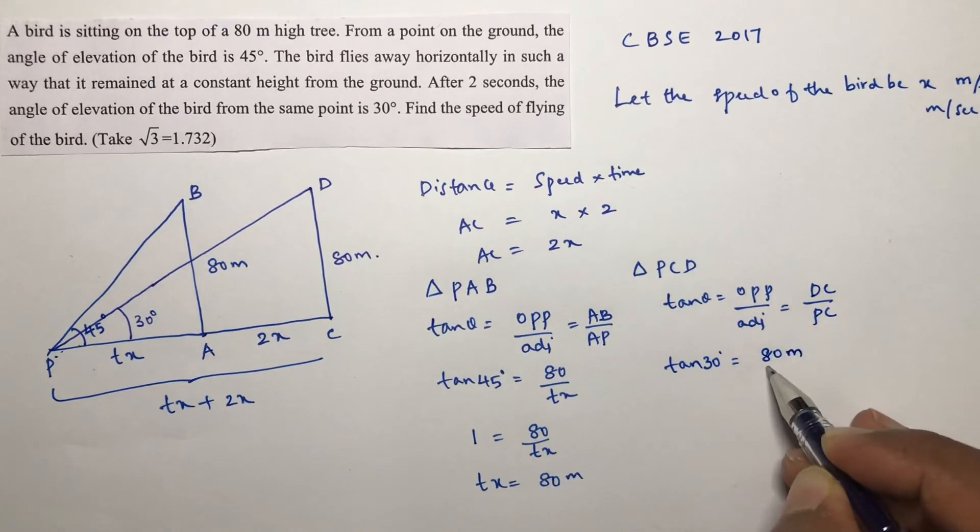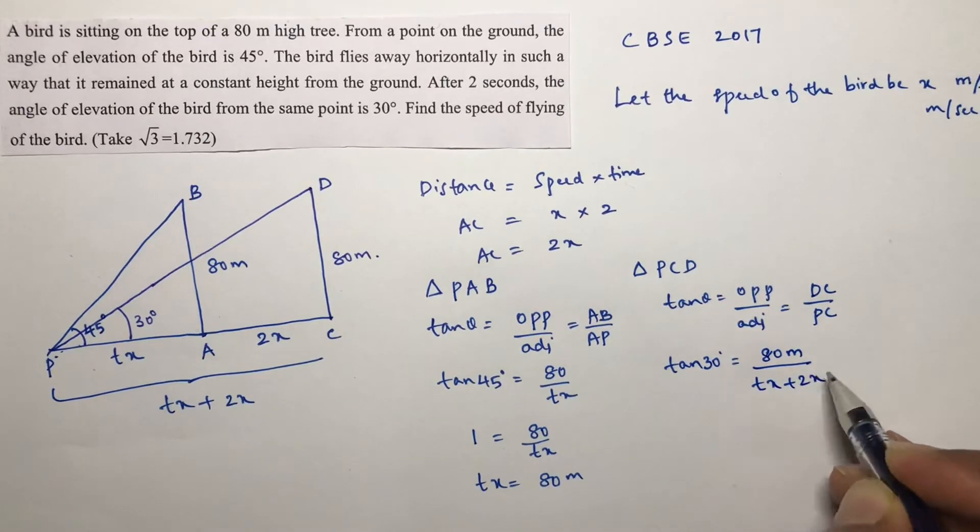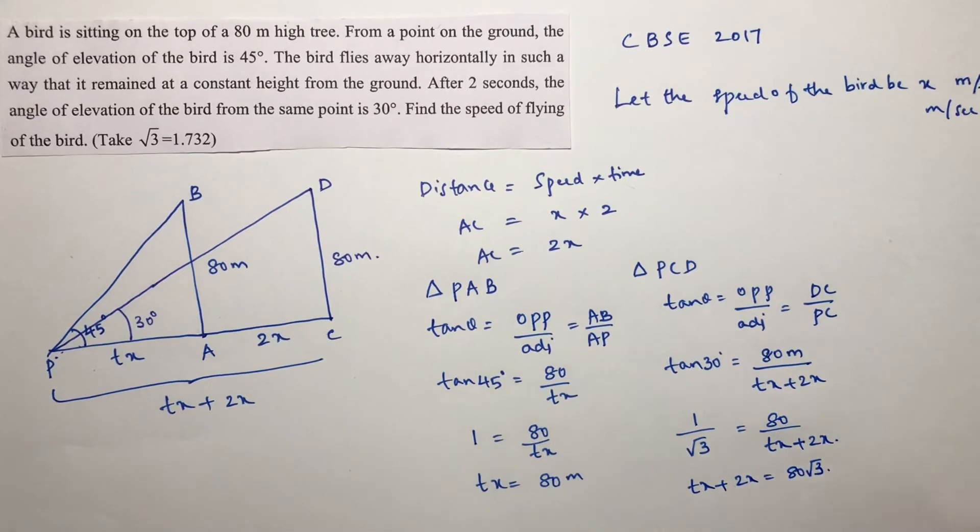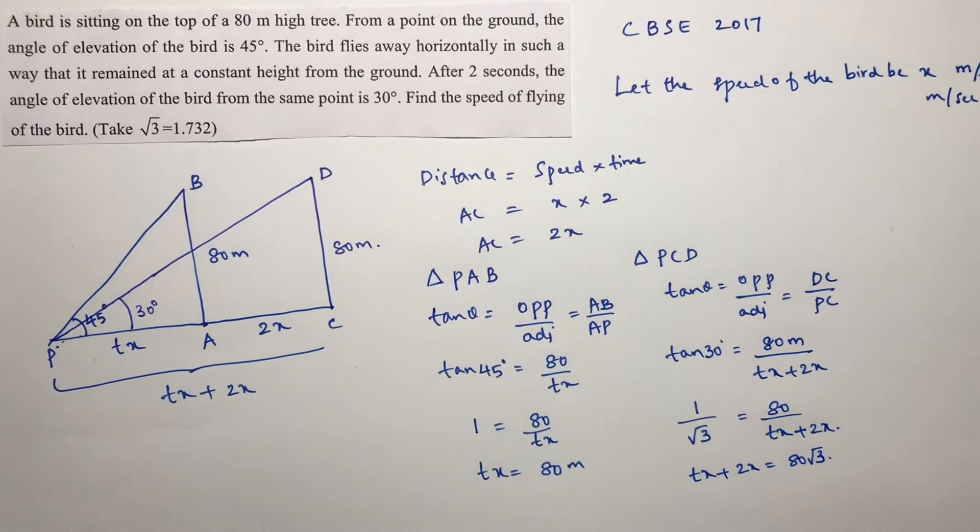Here for triangle PCD, opposite is DC, adjacent is PC total, so here total will be tx plus 2x. Tan 30, opposite is 80 meters, adjacent is tx plus 2x. Tan 30 is 1 by root 3 equals 80 by tx plus 2x. Cross multiply.